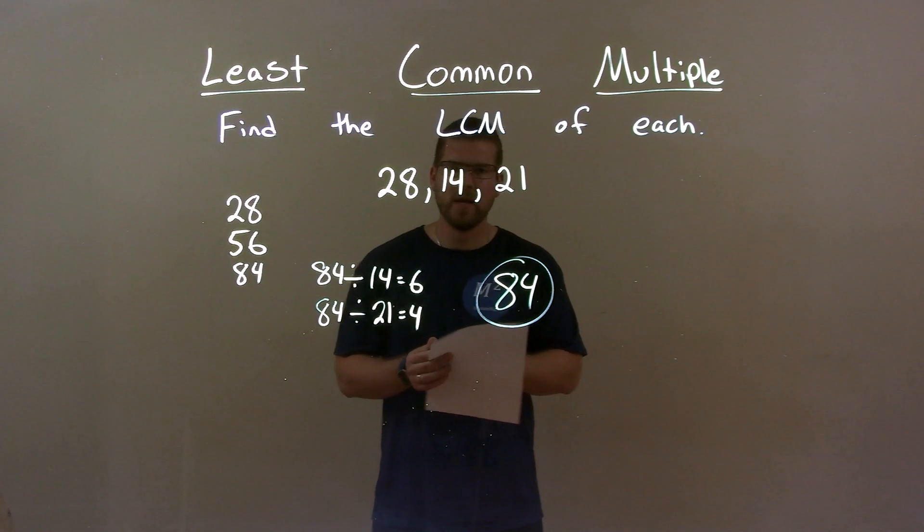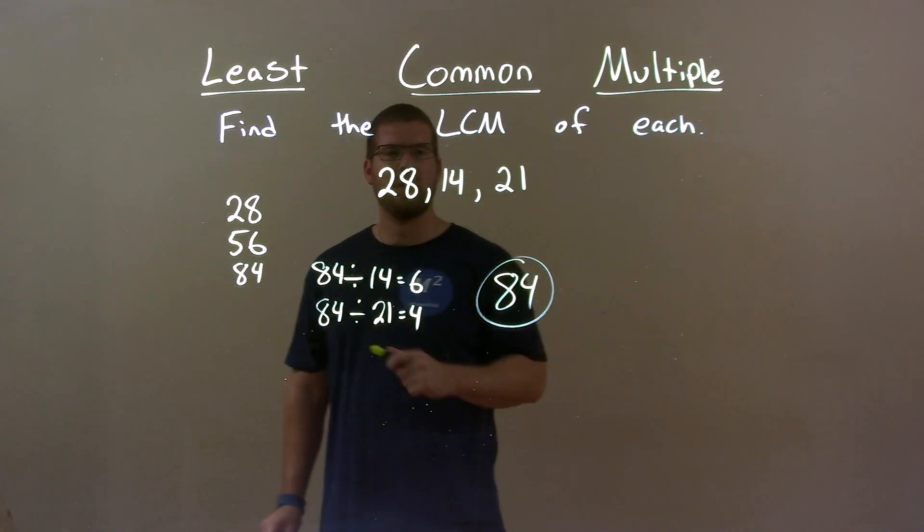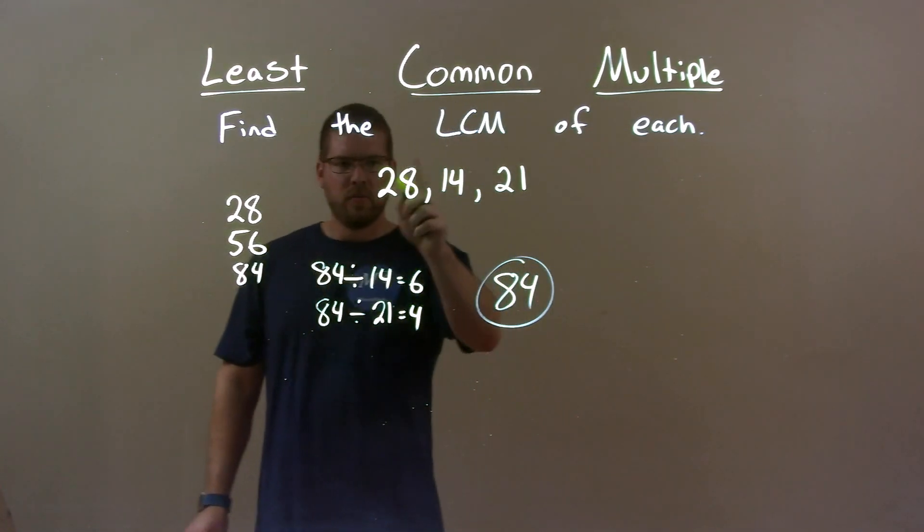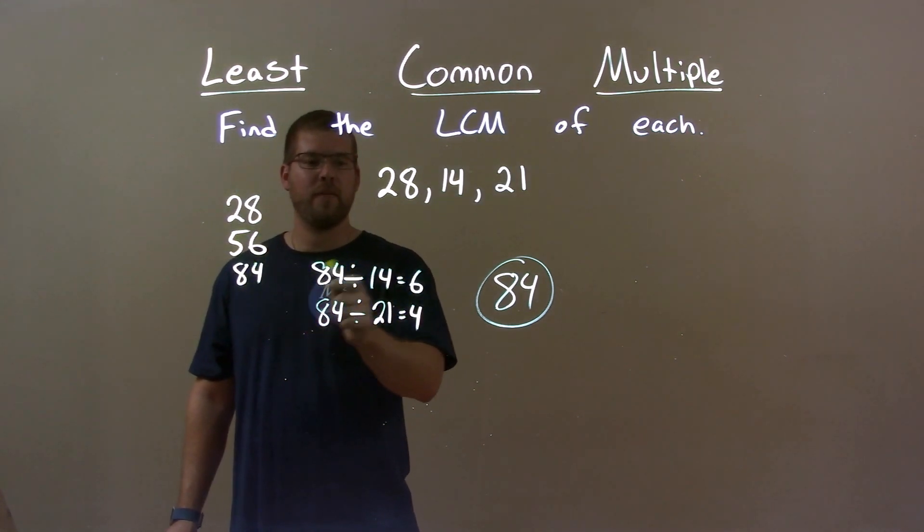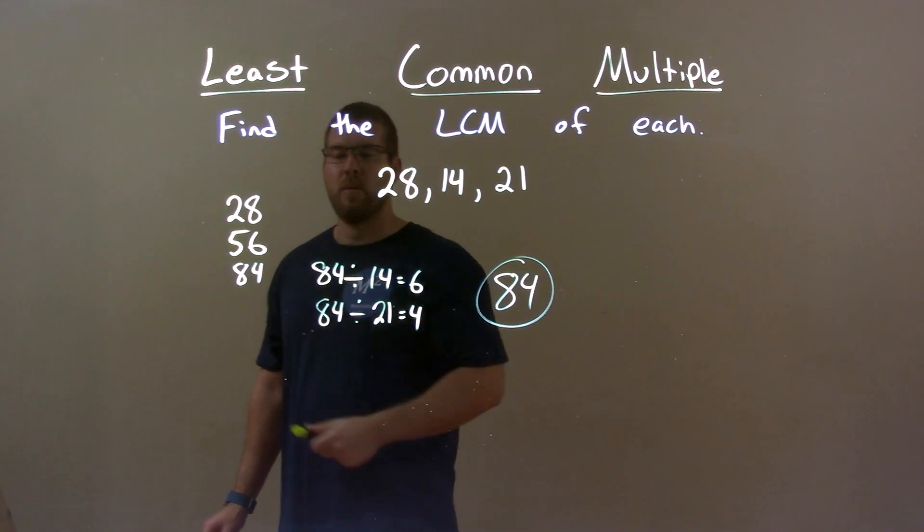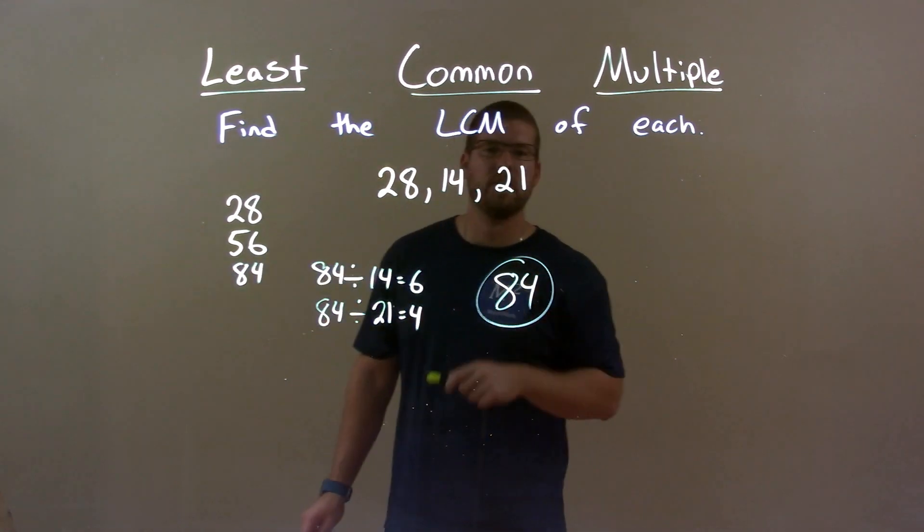So, quick recap. We're given 28, 14, and 21, and we have to find the LCM of that. Well, 28 is my largest number there, and I go through its multiples and find the smallest one that's divisible by 14 and 21, and that was 84, so my final answer here is just 84.